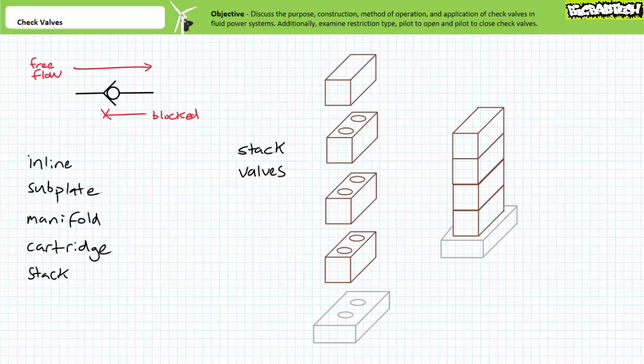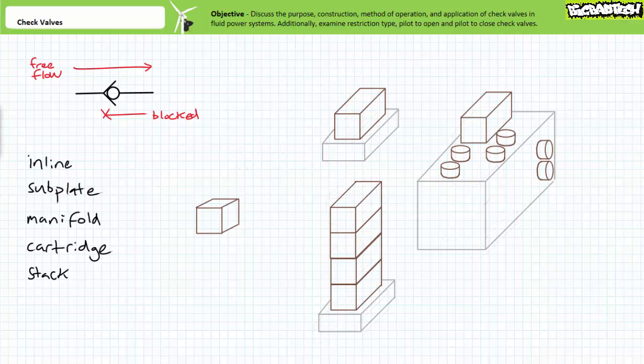The connected passageways within a tower of stack valves therefore save space, reduce the possibility of leaks, and eliminate the need for external piping. Within a larger system, a combination of these mounting methods can be used.